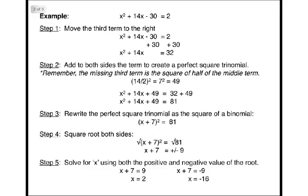Here's an example: x squared plus 14x minus 30 equals 2. In order to complete the square, the first step is always to move the third term to the right-hand side of the equation. So we'll take our negative 30, add 30 to both sides, and leave ourselves with x squared plus 14x equals 32.